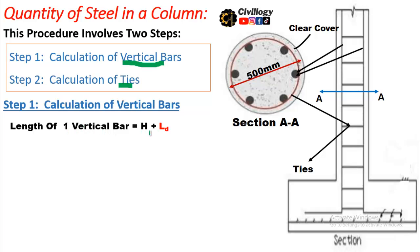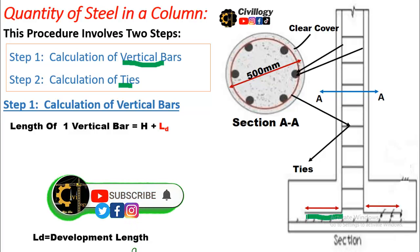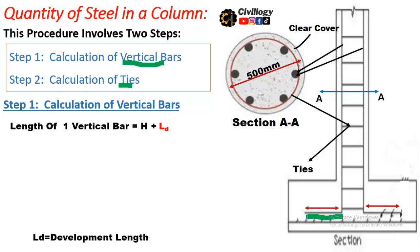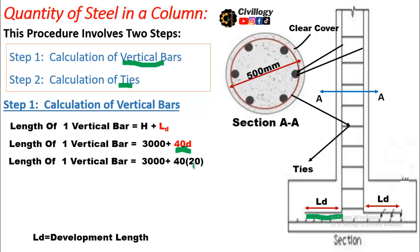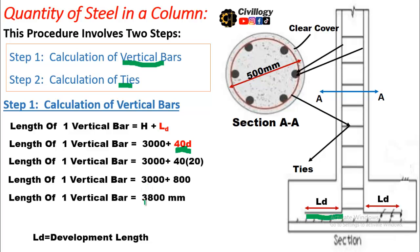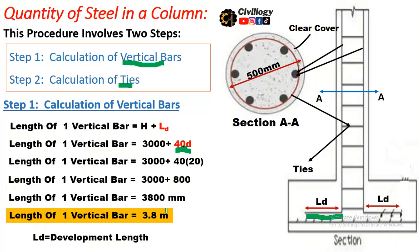Following the first step, the length of one vertical bar is equal to h plus ld, where h is the height of the column and ld is the development length. This extra length emerges from the footing to make a strong bond between the footing steel and the column. The height is 3000 millimeters and development length is 40 times the diameter of the bar, so 40 times 20 equals 800 mm, giving a total bar length of 3800 millimeters.